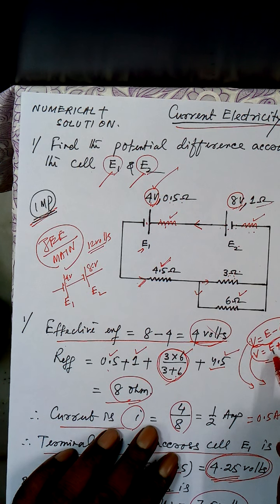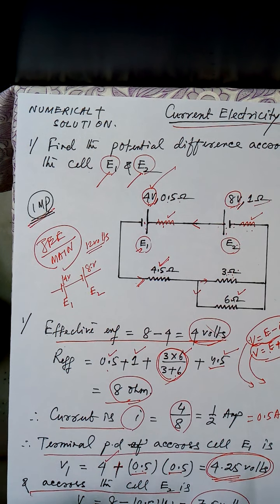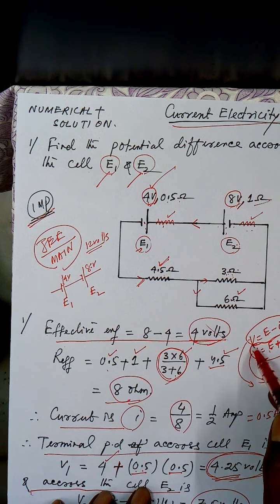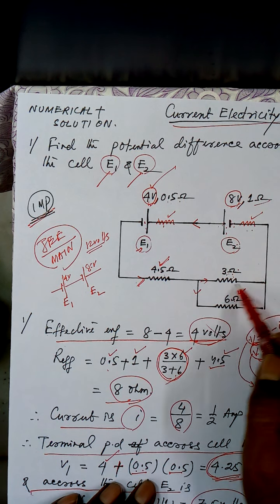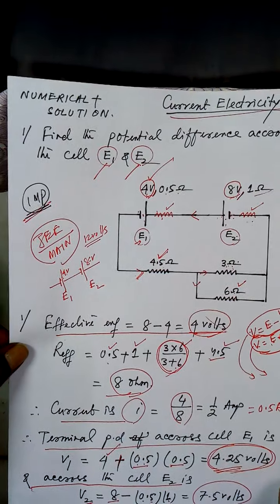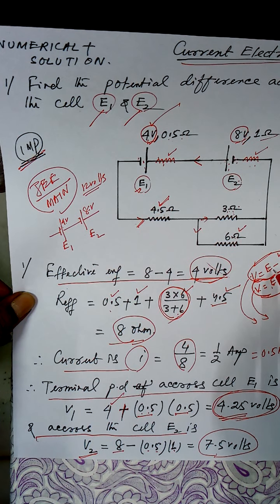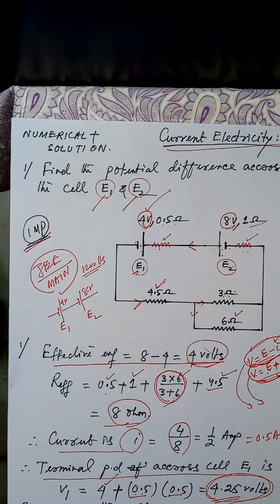To summarize: V = E + Ir applies when a cell is being charged — i.e., positive terminal connected to positive terminal — so terminal voltage is greater than EMF. V = E − Ir applies when current is being drawn from a cell (discharging), so terminal voltage is less than EMF. This distinction is very important for solving such problems.